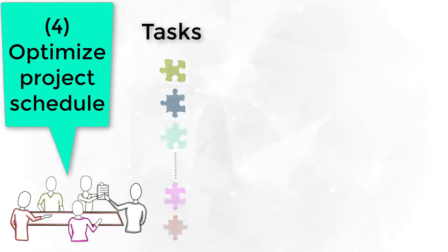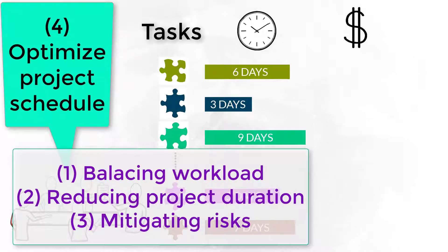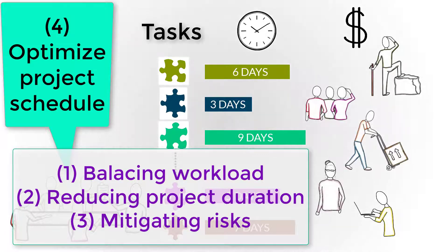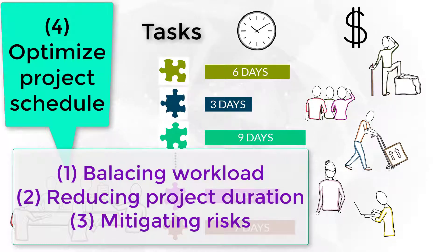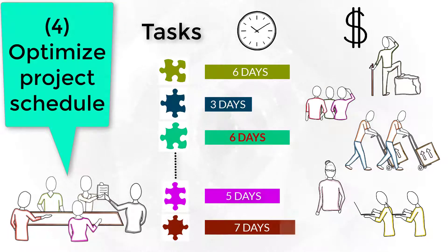The fourth scheduling step is when we try to optimize the project schedule. The three most important optimization strategies are: balancing resource workload — making sure that each team member has a realistic work hour planned in a period; verifying if you can reduce the project duration by allocating extra resources for a task; and evaluating execution risks, possibly accommodating buffers between tasks.